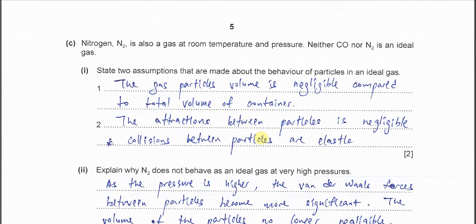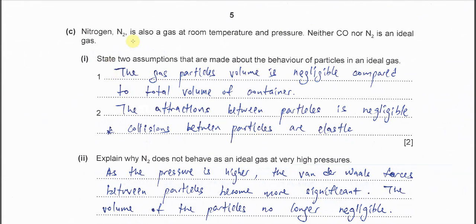Part c. Nitrogen is also a gas at room temperature and pressure. CO and N2 are not really ideal gas. State 2 assumptions that are made about behavior of particles in ideal gas. This is the kinetic gas theory.